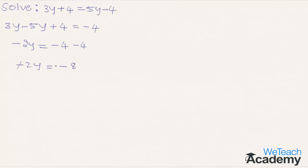The minus sign gets cancelled on both sides. By transferring 2 to the other side we get y equal to 8 divided by 2. Simplifying, 2 times 4 is 8, so we get the result y equal to 4.